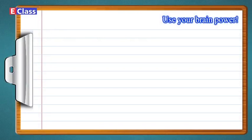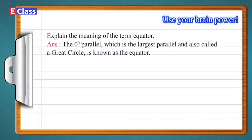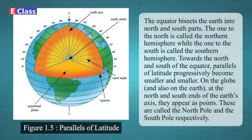Use your brain power — Explain the meaning of the term equator. Answer: The 0-degree parallel, which is the largest parallel and also called a great circle, is known as the equator. The equator bisects the earth into north and south parts. The one to the north is called the northern hemisphere, while the one to the south is called the southern hemisphere.